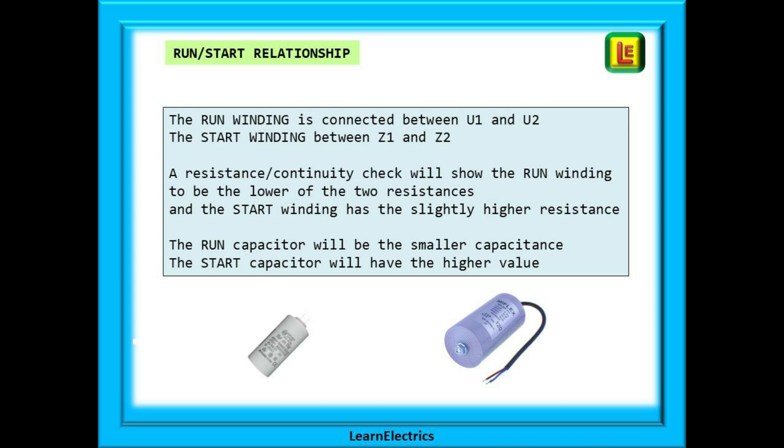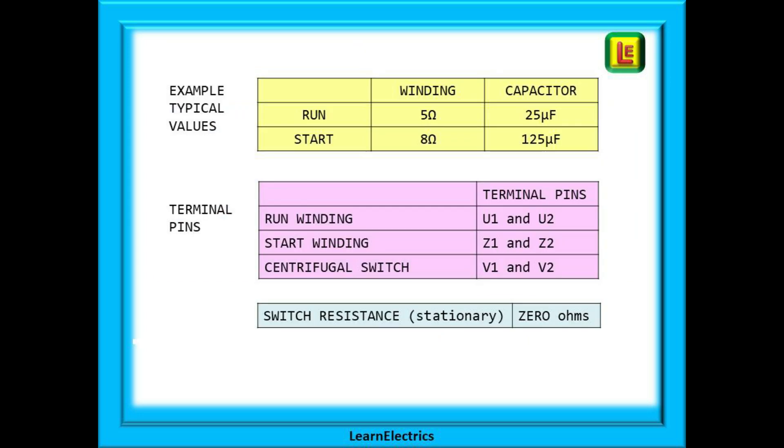Following the same pattern as the windings the run capacitor will be the smaller capacitance and the start capacitor will have the higher value sometimes four or five times greater. Here are some typical values of resistance and capacitance. Every motor type will have different values determined by the manufacturer and these here are just a guide.